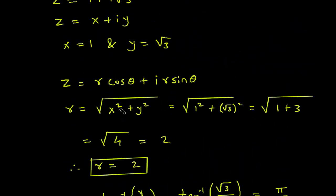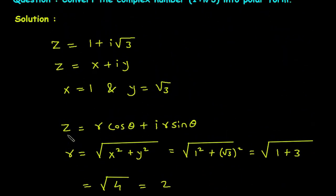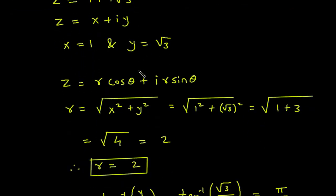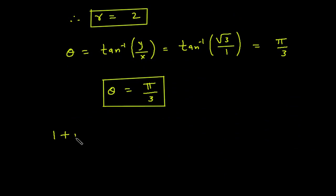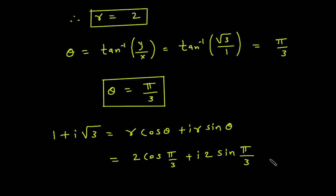We also have the value of r. So from this we can find the polar form. The polar form is z equal to r cos theta plus i r sin theta. So with r equal to 2 and theta equal to pi by 3, this gives 2 cos(pi by 3) plus i 2 sin(pi by 3). This is our final answer.